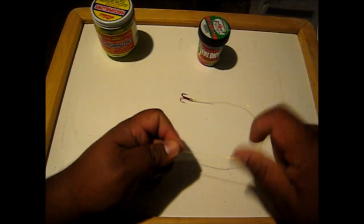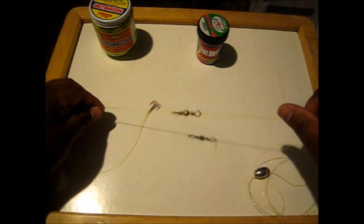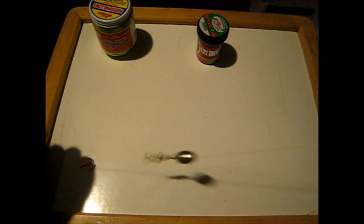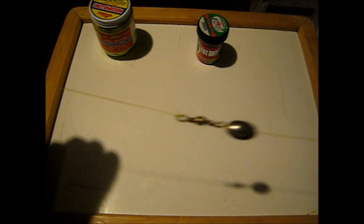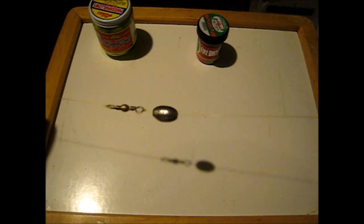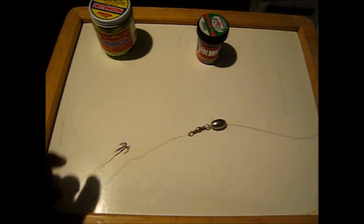And again, always remember to wet your line to make it a little bit easier. Okay, so there you have it. There's the swivel and the egg sinker that's going to move up and down your line.